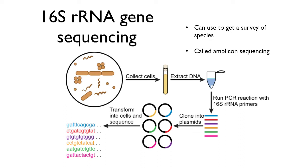There are issues with this method, however. Since an amplification step is used, this may introduce bias if the PCR has a bias for or against certain DNA sequences, and it's known that this can happen. Also, there's no reason to assume the universal primer used is actually universal — if it does not recognize the 16S ribosomal RNA gene of a species, it won't be amplified, and that species won't be counted.